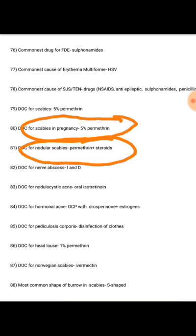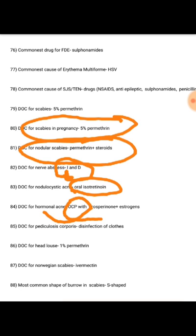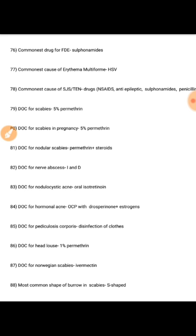Drug of choice for nerve abscess is incision and drainage. Drug of choice for nodulocystic acne is oral isotretinoin. For hormonal acne, you use OCP containing drospirenone plus estrogen.